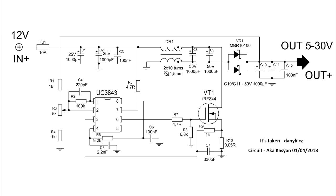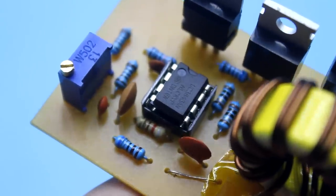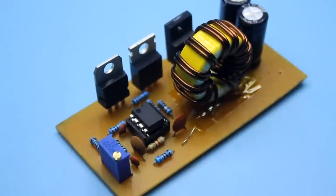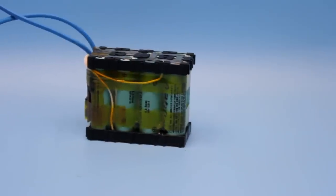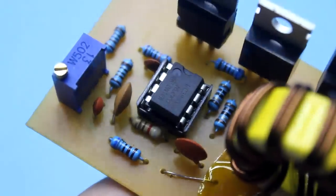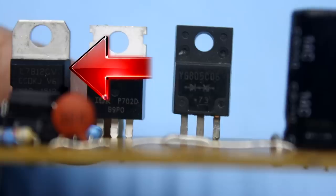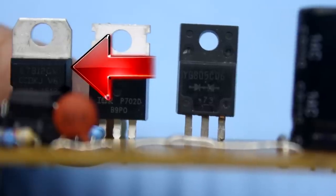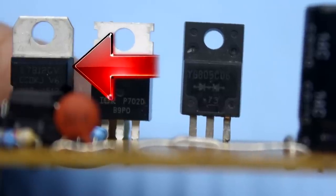This is a single-ended converter based on the PWM controller UC3843. Since the voltage from my battery is quite high, so for the smooth work of the PWM chip, I had to add a 12V linear regulator to the board. It is not indicated on the circuit.